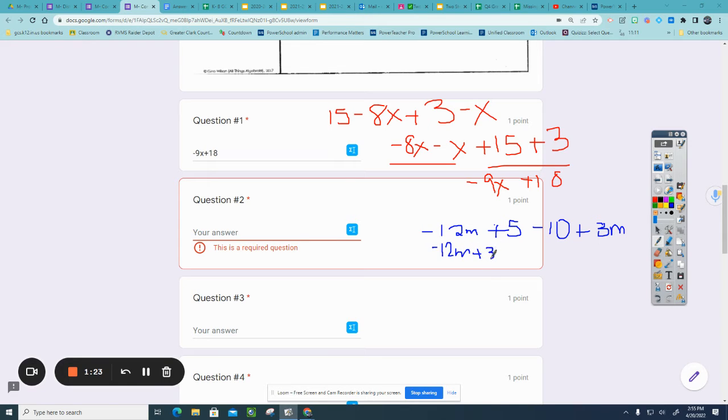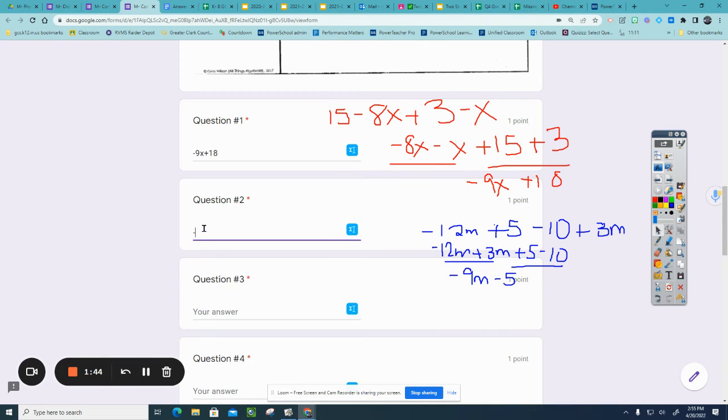I'm going to combine my terms that are alike. Negative 12 plus 3 becomes negative 9m. Positive 5 minus 10 more would be negative 5. So the answer to this one should be typed with no spaces, negative 9m minus 5.